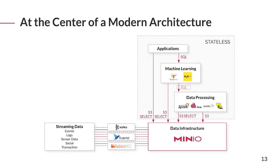Since MinIO can sit at the center of your architecture, you don't need to manage multiple large data storage infrastructures. You can generally rely on MinIO as the only or primary one, which greatly reduces the cost and complexity of your deployments. Because there are no restrictions on hardware or specific vendors, there's no lock-in to worry about — you can scale your MinIO deployment as needed based on the available hardware at that time.